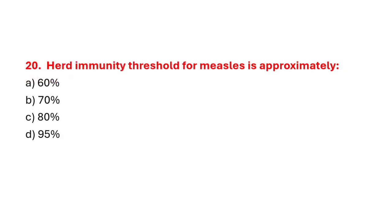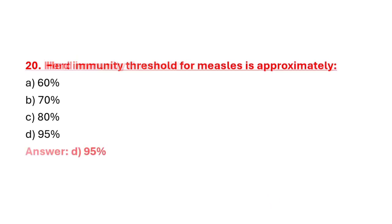Question 20: Herd immunity threshold for measles is approximately. Option A: 60%. Option B: 70%. Option C: 80%. Option D: 95%. Correct answer is Option D: 95%.